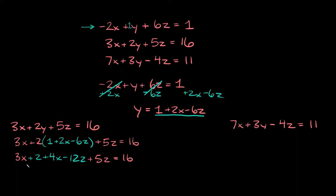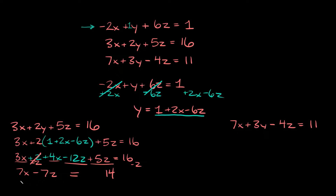Combining like terms: 3x and 4x gives us 7x; negative 12z plus 5z gives us negative 7z; and we have the constant plus 2. Moving that to the other side by subtracting 2 from both sides, those cancel out and 16 minus 2 is 14. So our first new equation is 7x minus 7z is equal to 14.